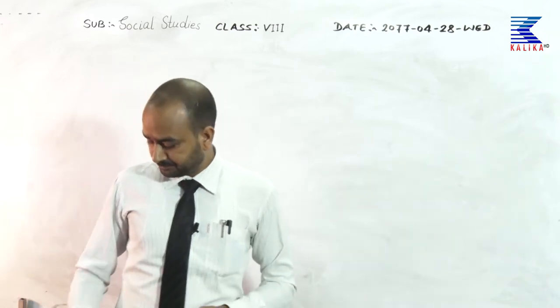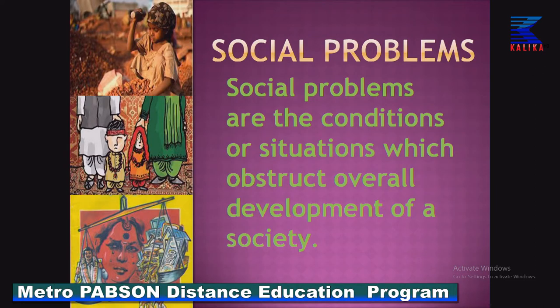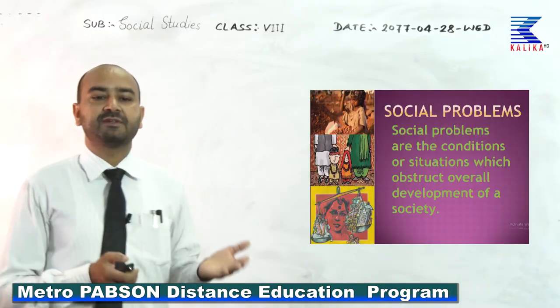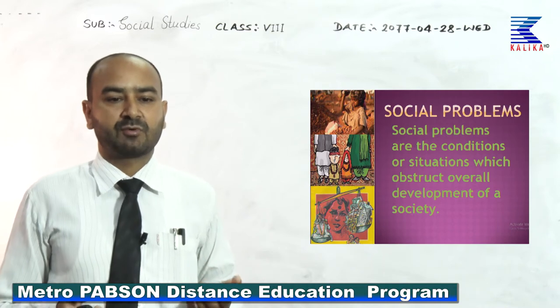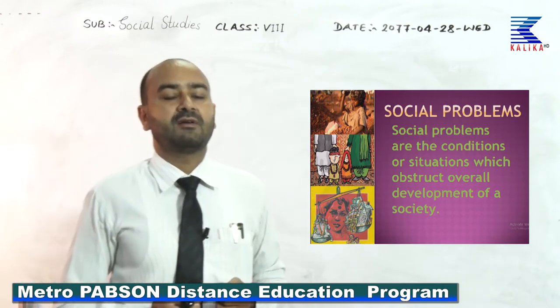Without further delay, we are going to start the session. Look at the slide. Social problems are the conditions or situations which obstruct the overall development of a society. That means social problems are obstacles or hindrances in the development of a society — they malfunction the overall activities of a society and hamper the developmental activities of a country.